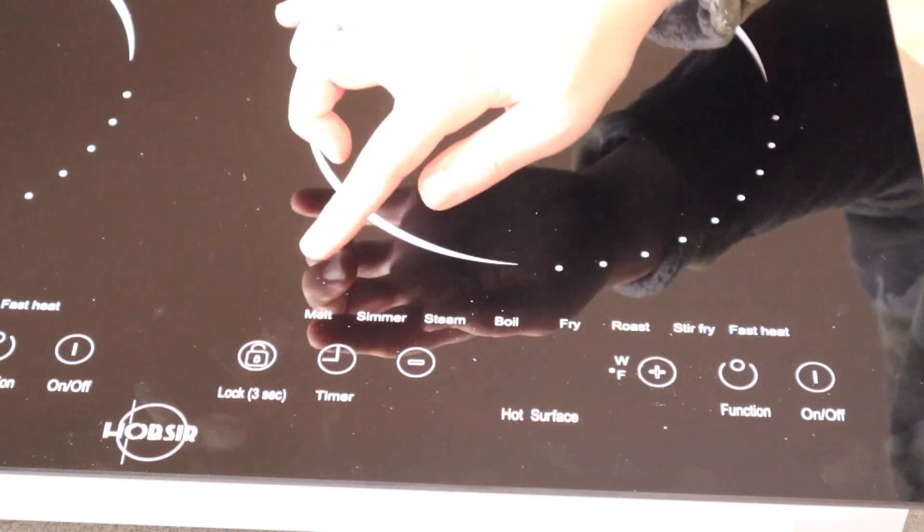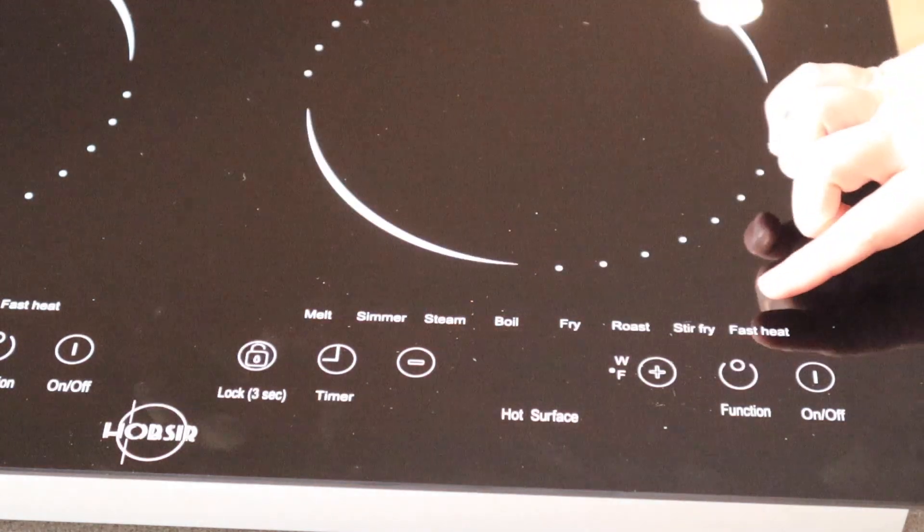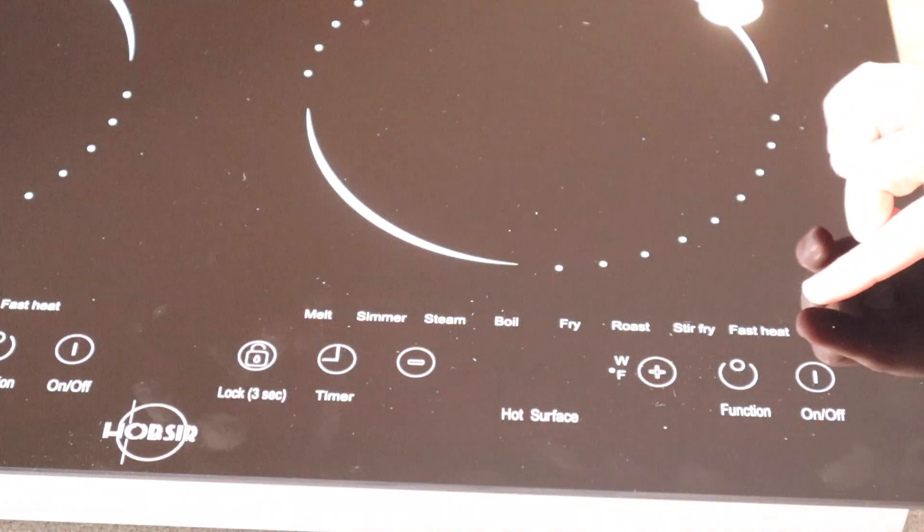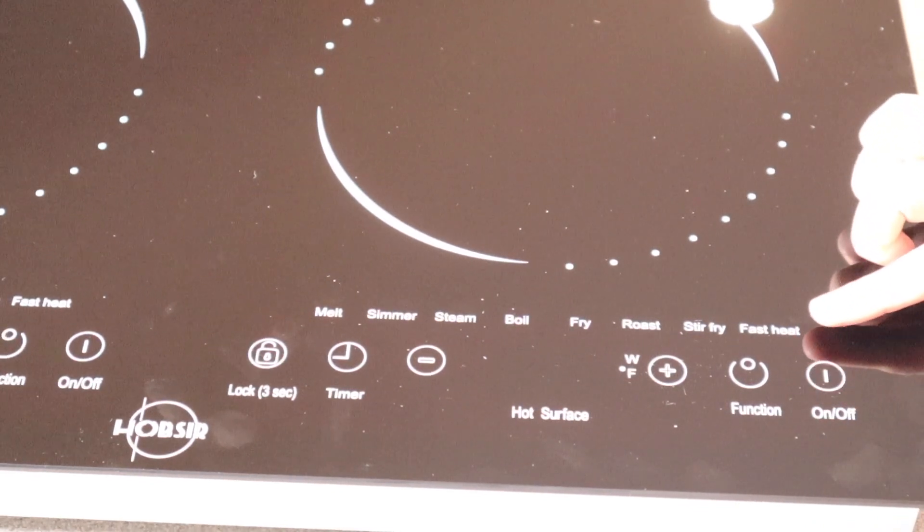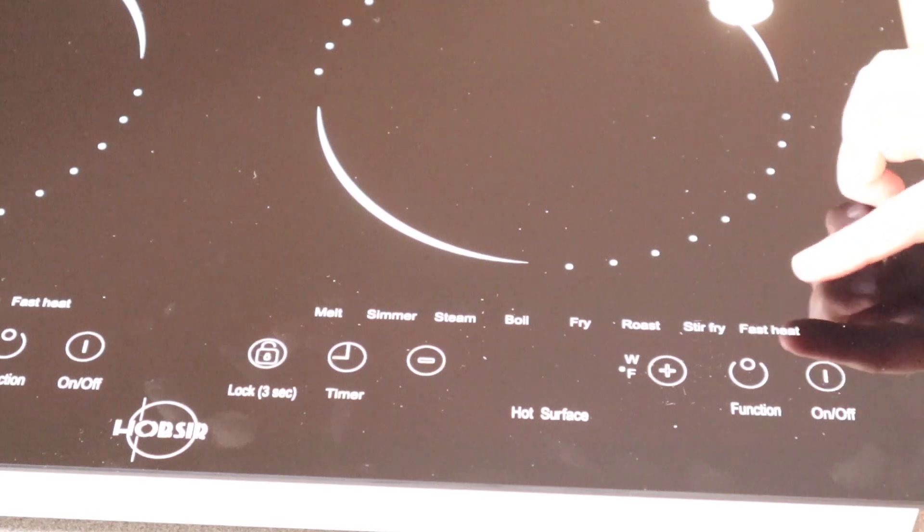So starting down here, this is 200 degrees Fahrenheit, and then up here at fast heat, this is going to be 700 to 800 degrees Fahrenheit. So this is going to be a great option if you're just trying to get up to a high temperature really quickly.